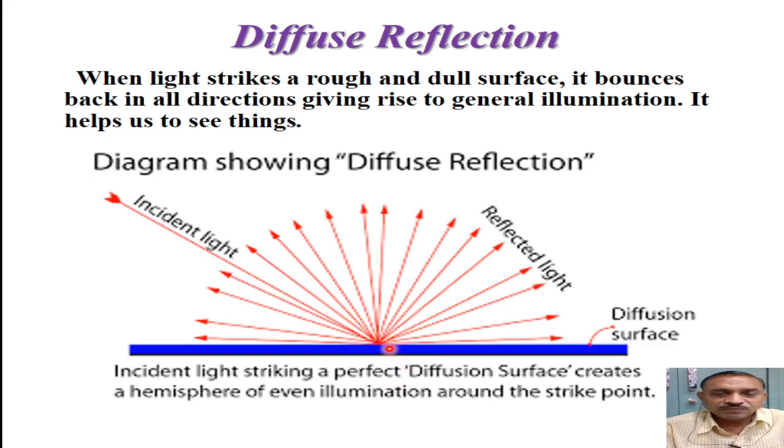Because in that case, when the light falls on that paper, then it is reflected in all directions, giving us the hemisphere as shown in this diagram.